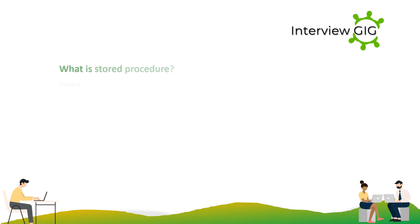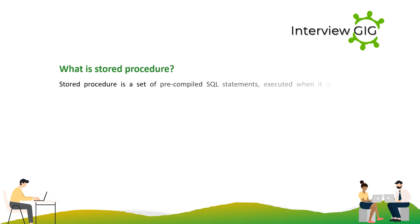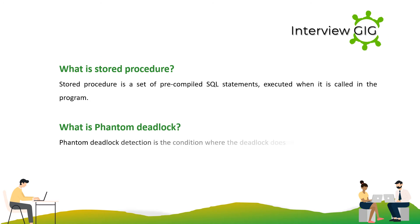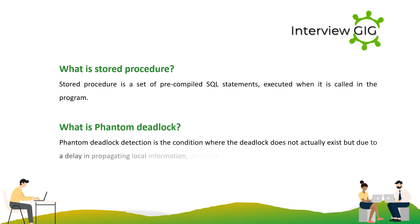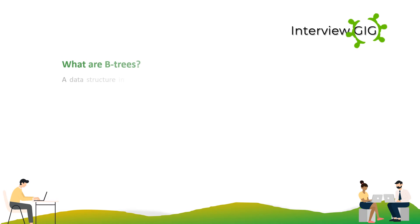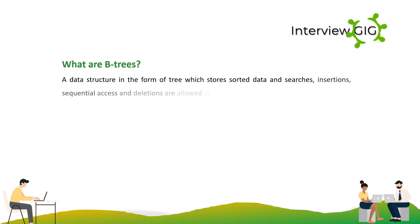A stored procedure is a set of pre-compiled SQL statements executed when it is called in a program. Phantom deadlock detection is the condition where a deadlock does not actually exist but due to a delay in propagating local information. A B-tree is a data structure in the form of a tree which stores sorted data, and searches, insertions, sequential access, and deletions are allowed in logarithmic time.